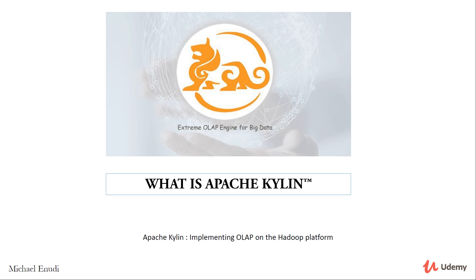Kylin can make that decision. So you just talk to Kylin — Kylin receives the query and makes the decision on who should best answer the question, either from the pre-aggregation in the cube or from the source in Hive, Impala, Drill, or the likes.